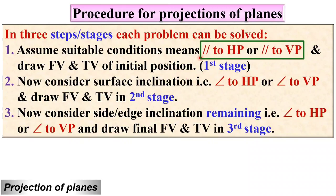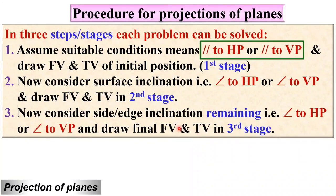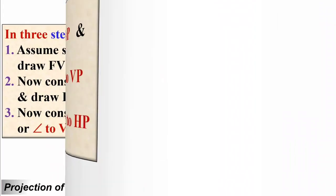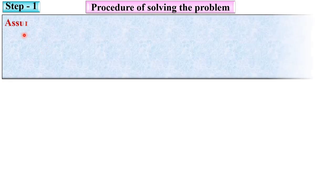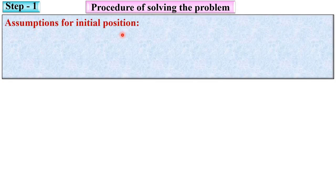In the first stage you have to assume the plane is parallel to HP or parallel to VP — but how do you decide between these two options? Let us see all three stages one by one, starting from step number 1: assumptions for the initial position.